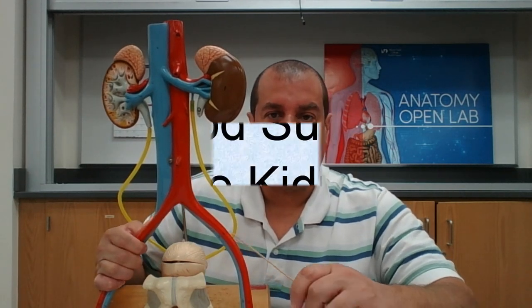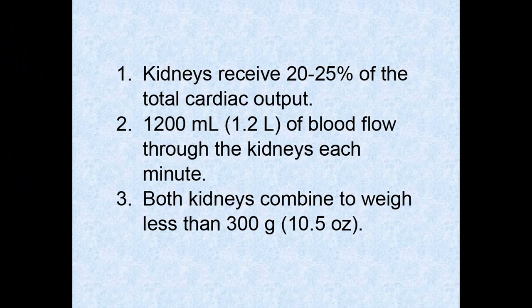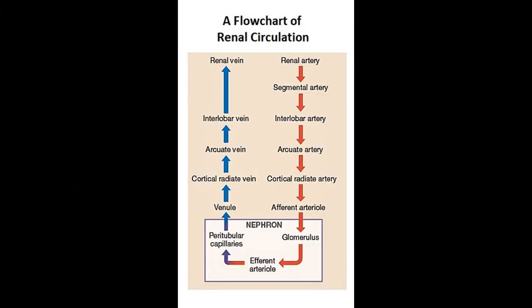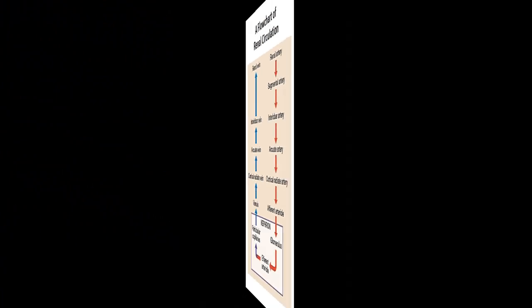Let's look at how blood gets into the kidney. The kidneys receive 20 to 25 percent of total cardiac output; in healthy individuals about 1,200 milliliters of blood flow through the kidneys each minute — a phenomenal amount for organs with a combined weight of less than 300 grams. I'll be using a flow chart to trace blood through the kidneys.